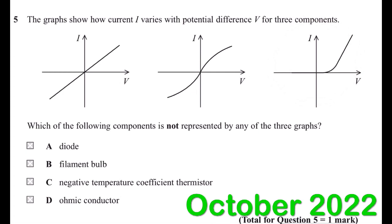So the correct answer for this question: none of these is describing the negative temperature coefficient thermistor. So the correct answer for question five is C.